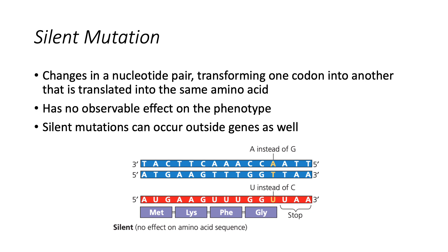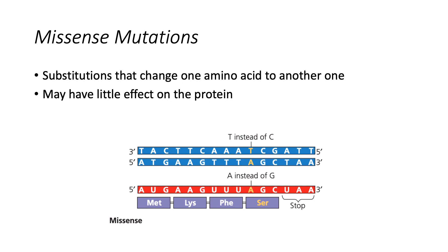Such a change is an example of a silent mutation, which has no observable effect on the phenotype. Silent mutations can occur outside genes as well. Substitutions that change one amino acid to another are called missense mutations. Such a mutation may have little effect on the protein — the new amino acid may have properties similar to those of the amino acid it replaces, or it may be in a region of the protein where the exact sequence of amino acids is not essential to the protein's function. Substitution mutations are usually missense mutations.